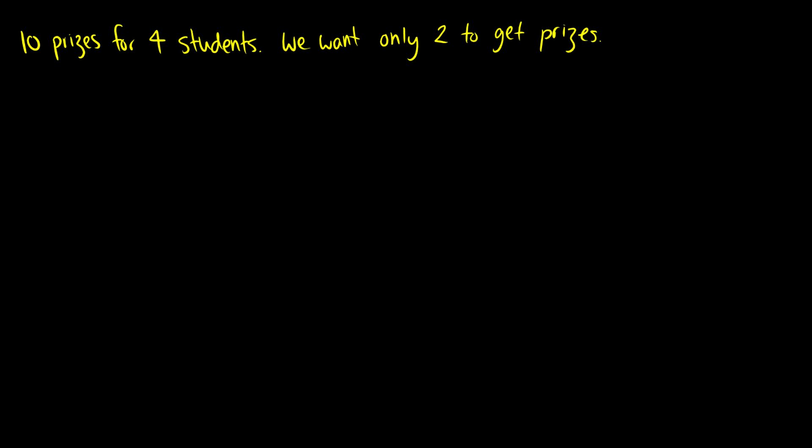So here's another way. We have 10 prizes to give to four different students but we want only two students to get prizes. So what we want is exactly two and right now we know this is S2 minus 3 choose 1 S3 plus 4 choose 2 S4. So let's figure out what S2 is. Well S2 is the number of ways that we give 10 prizes to only two students. Okay so we're going to choose two students out of the four to get the prizes and then we're going to distribute the 10 prizes between those two students.